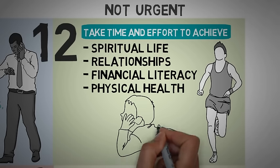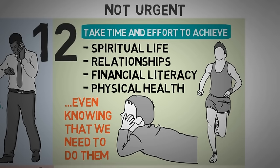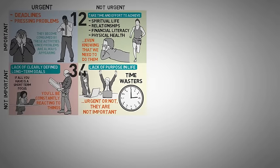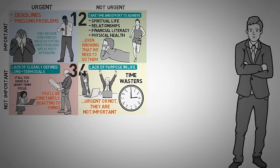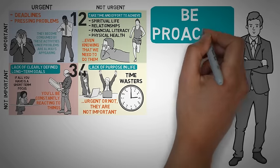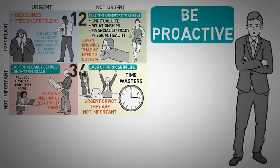Quadrant one deadlines and emergencies will always appear, and we all occasionally spend time with quadrant three and four activities. That's why, to be able to find time to work on your quadrant two activities, you have to be proactive enough to reduce and, when necessary, say no to other less important tasks.